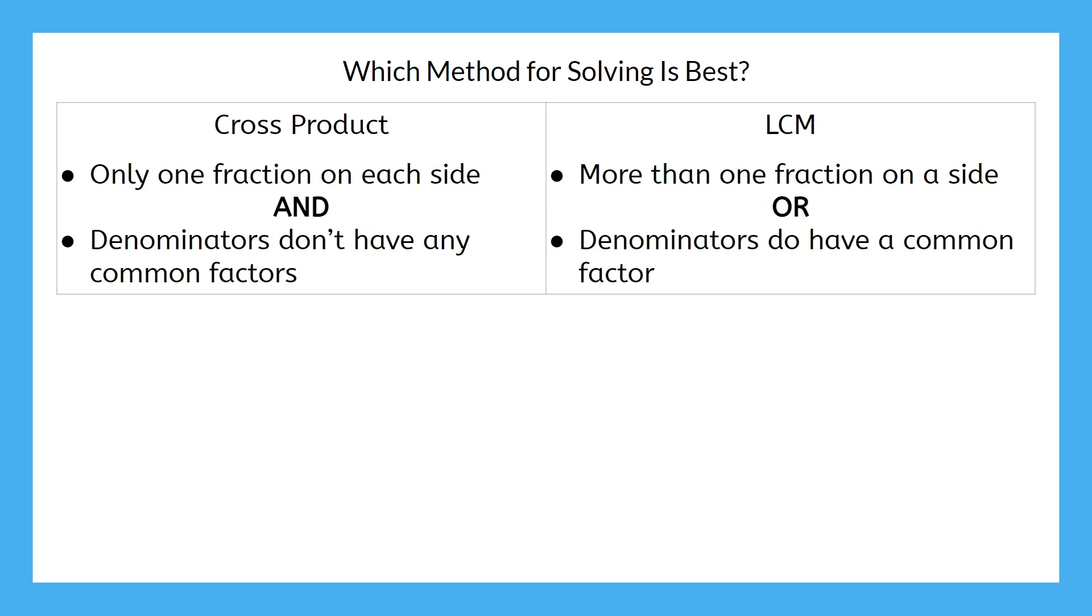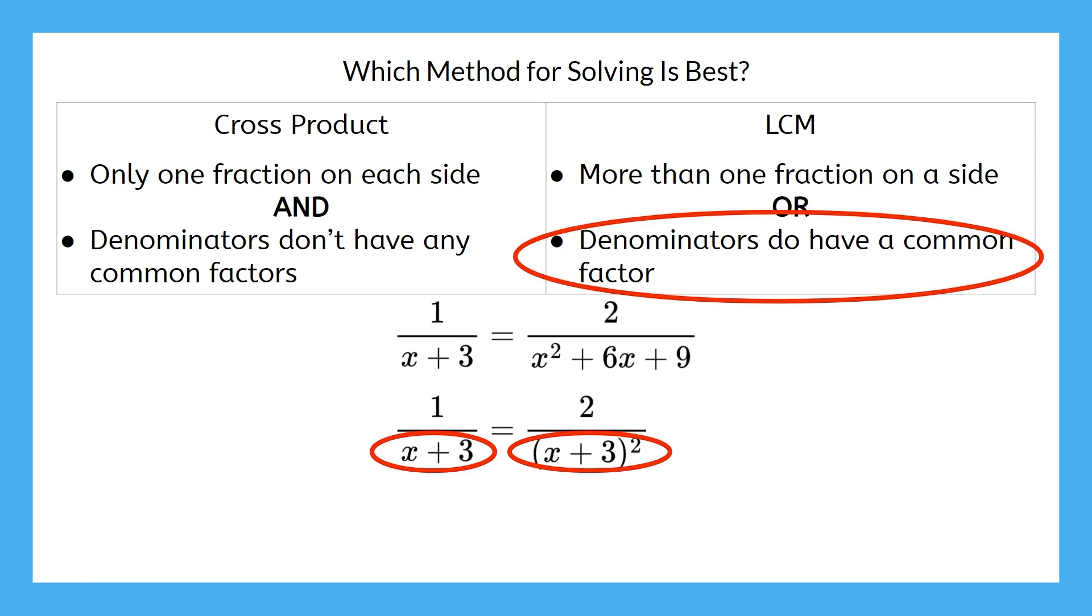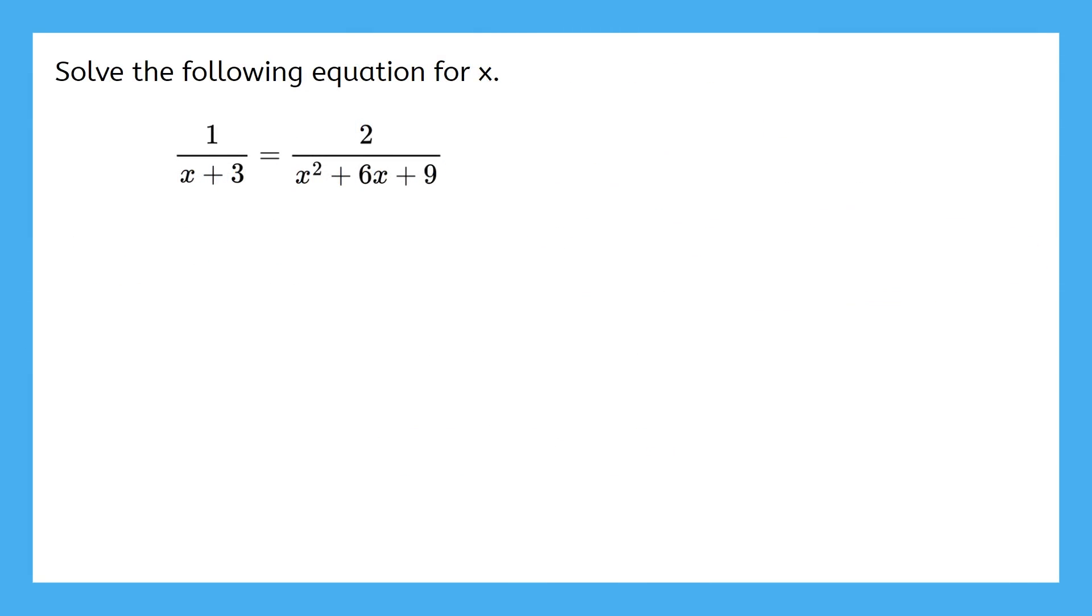Let's look back at the final problem from our last video. We solved this using the cross product, but it ended up being more work than it needed to be. The reason for that was because the denominators did have a common factor, and the LCM would have been an easier method. Take a moment here to pause and look back at your notes for this problem. Think about how difficult it seemed when we first solved it.